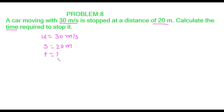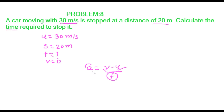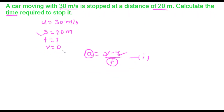When the car moving at 30 meters per second is stopped at a distance of 20 meters, its final velocity becomes zero. We know acceleration is given by (v − u) / t and we have to find t. But we don't have acceleration, so first we use the equation v² = u² + 2as to find acceleration.